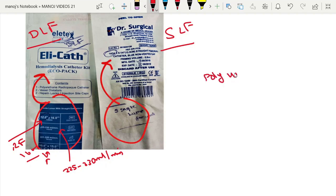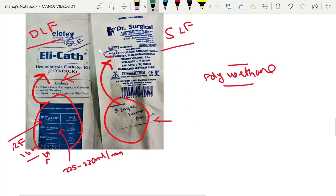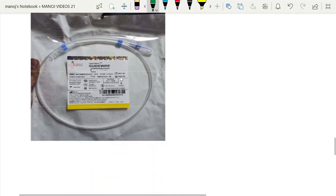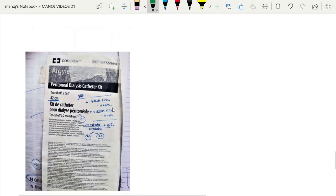Here single lumen catheter, it is being mentioned as gauge not the French gauge. So basically it is 2 mm outer diameter, so that means 6 French. It is about half of this double lumen catheter. This one is the single lumen catheter. The guide wire commonly used is J tip guide wire, the length is 70 centimeter, commonly being used for placing these catheters.